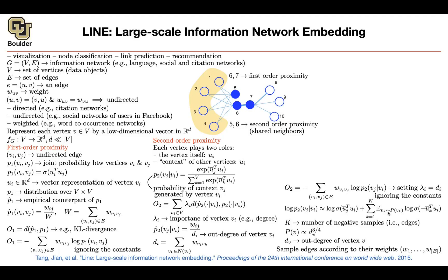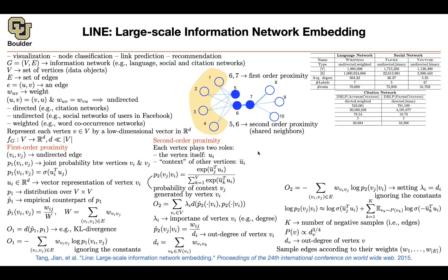There's a problem with this loss function on weighted graphs: a higher-weight edge is more important than a lower-weight edge, but standard stochastic gradient descent samples all edges equally, slowing convergence. The fix is to change your sampling strategy during mini-batching — include edges proportional to their weight, so more important edges appear more often during training.